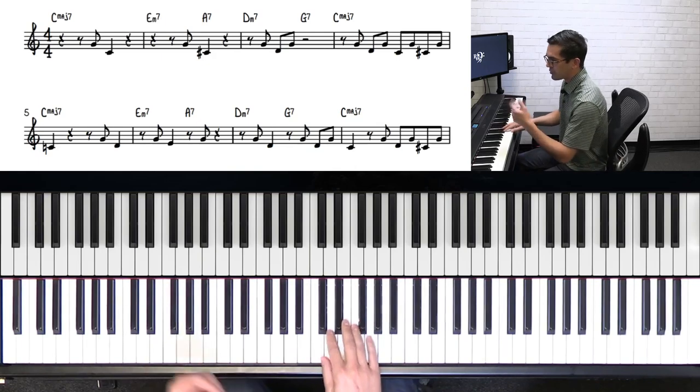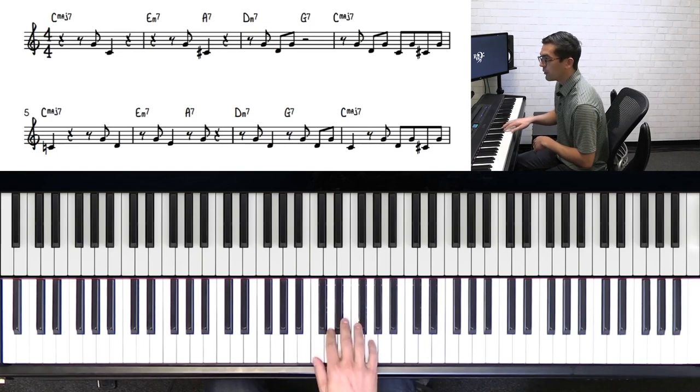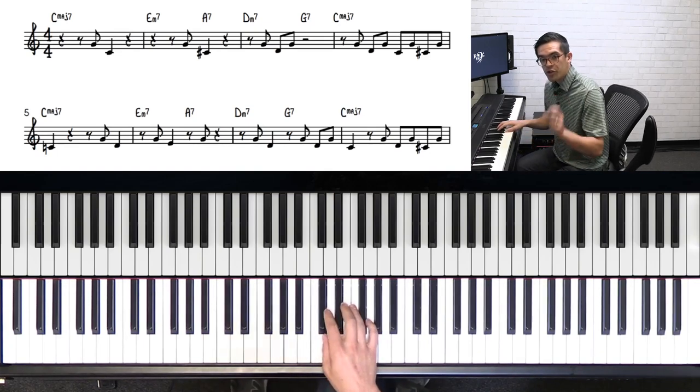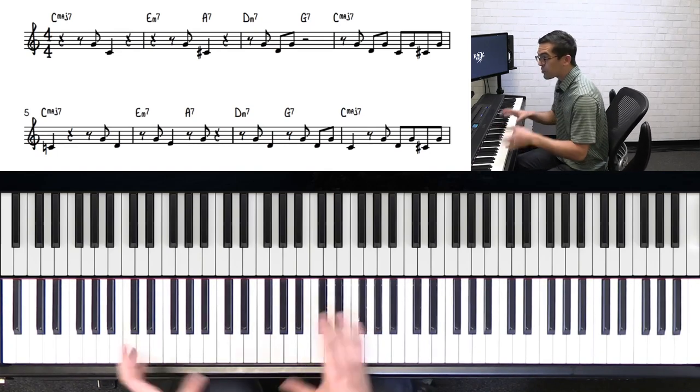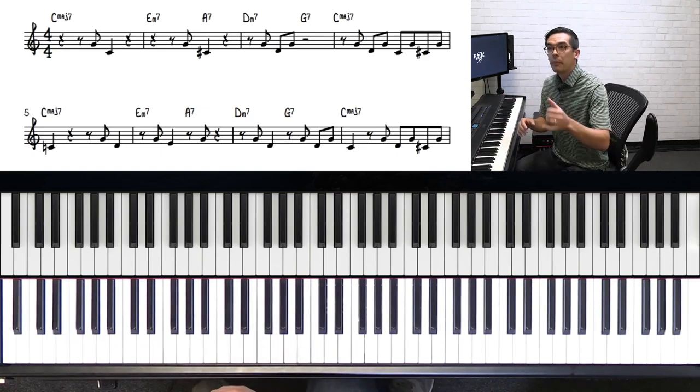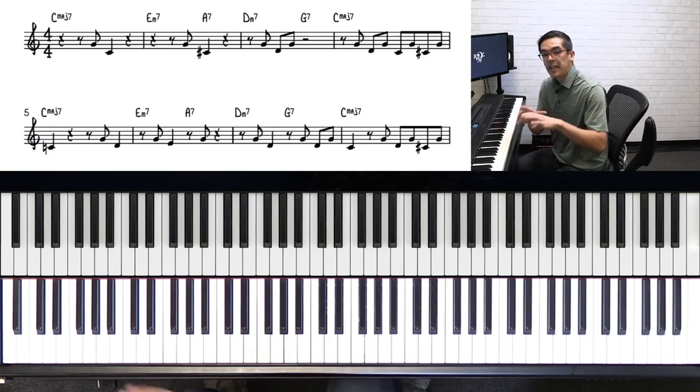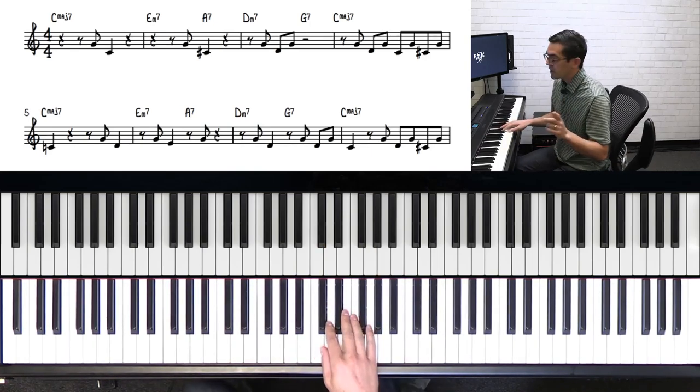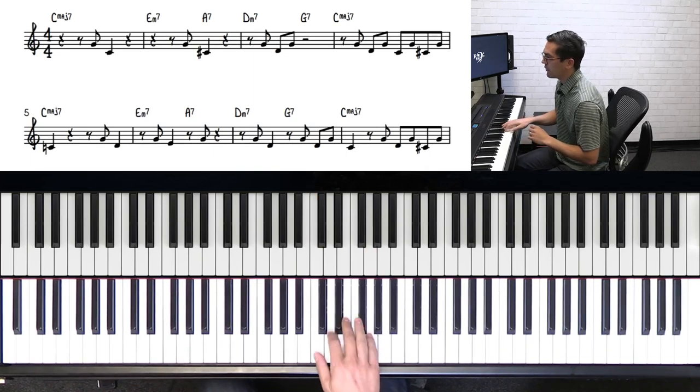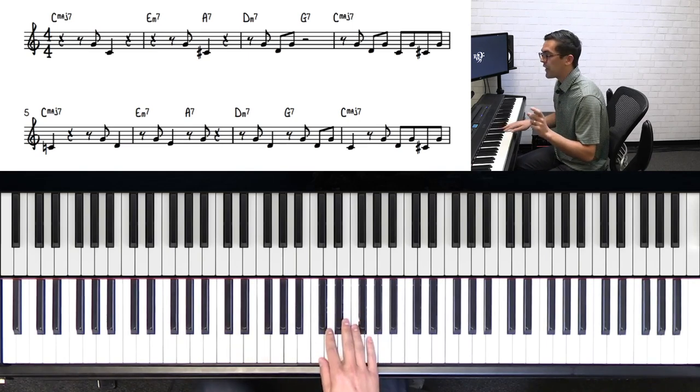Then he goes, starting at measure five, one, two, three. So right there, he only plays that one G over the A7 chord. That's really cool because up until now we've heard the entire motif, the ba-dup, ba-dup. This is the first time where he takes away a note, he only plays one note instead of the two.